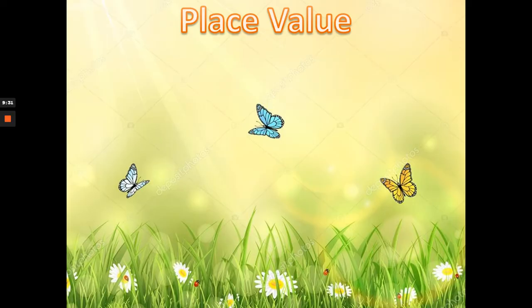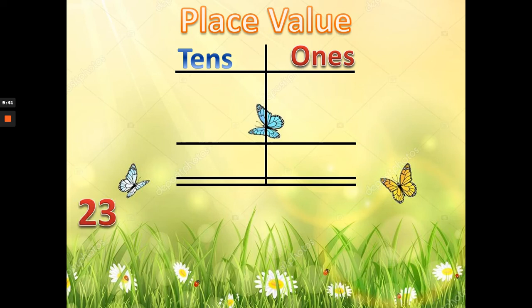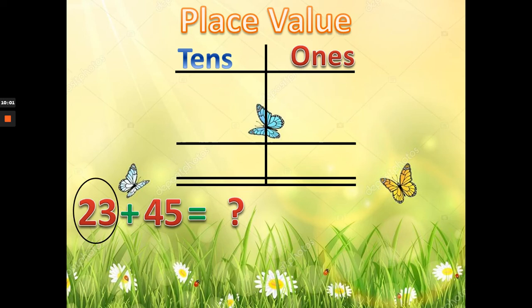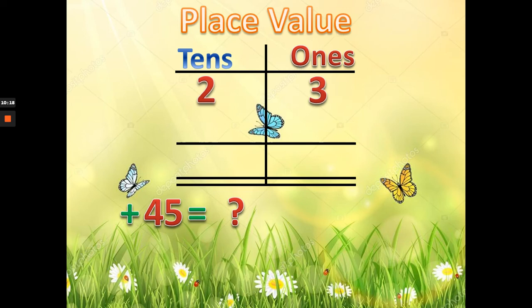It's the same thing — we will use place value, tens and ones again — but this time we have a two-digit number, 23, plus another two-digit number, 45. Let's put them in the correct place. Starting with 23: 3 goes in the ones place and 2 goes in the tens place.